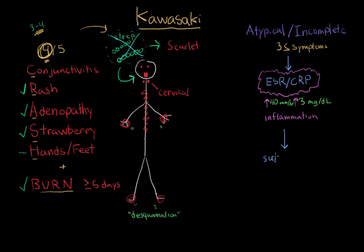To confirm this, the next step is to get supplemental labs. These may include labs such as elevated ALT in the blood, elevated platelets in the blood, elevated white blood cells in either the blood or the urine, or decreased albumin.